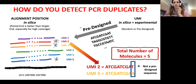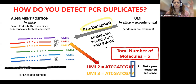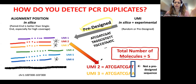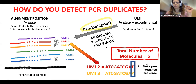However, we can also choose to pre-design the UMIs — deciding the exact sequence of each UMI in advance. In that case, if we see a UMI that we didn't design, we can flag it as something unexpected, which can help identify sequencing or library prep errors.